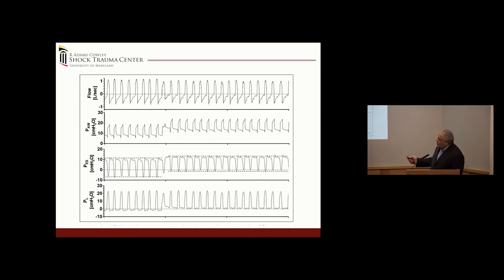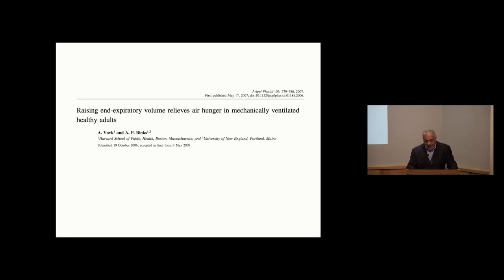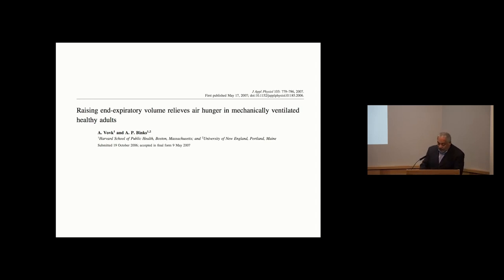Looking at esophageal and pleural pressure, when you increase PEEP you can see that the pleural pressure change decreases. Even in healthier patients, higher lung volume seems to decrease phrenic nerve output. There's also a reflex where taking a big breath slows your heart rate and slows the desire to ventilate — so higher PEEP may reduce respiratory drive.